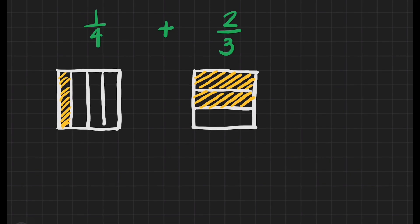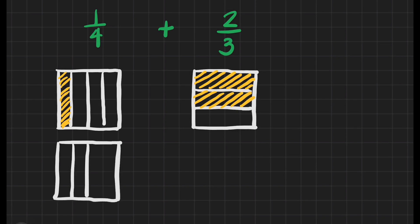Now we'll draw again a box to represent this 1. Next, we will follow the number of lines and the number of divisions of the 2nd fraction — so we'll just follow how it is divided, and it is divided into 3 parts. And then we have to color it just like what we have in the 1/4.